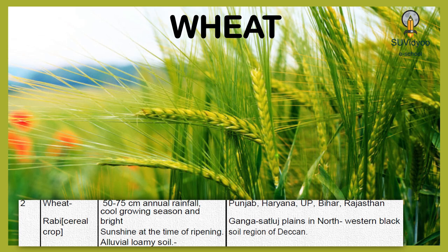The production of wheat is concentrated in the Ganga-Sutlej Plains in the northwestern region and the black soil region of Deccan.